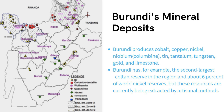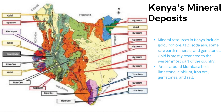Moving on, we have Kenya's mineral deposits. Kenya has quite a number of minerals. Looking at the map, we have gold, gypsum, phosphate, iron ore, soda ash, and others. The map is well laid out showing where these minerals are located — Kenya has both metallic and non-metallic minerals, and the map helps us see where these mineral deposits are found across the country.